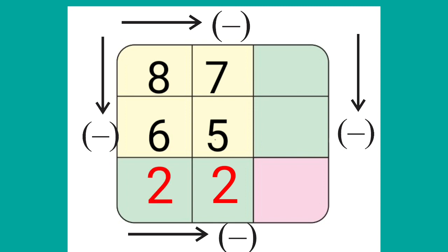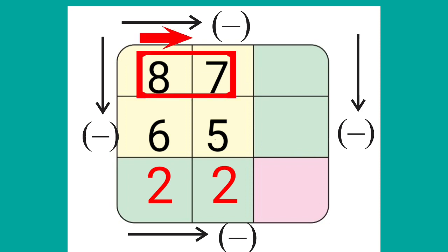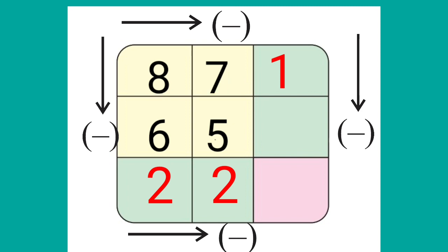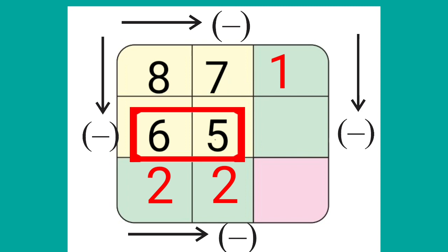Now in the first row, subtract the number at the right side from the number at the left side. 8 minus 7 is equal to 1. And in the second row, 6 minus 5 is equal to 1.